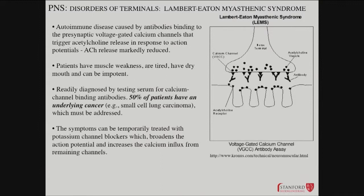The flip side of myasthenia gravis is Lambert-Eaton myasthenic syndrome. This is when antibodies to the presynaptic terminal are generated, often for mysterious reasons. The voltage-gated calcium channels that live in the presynaptic terminal and open to allow calcium in and allow vesicle fusion — they fall under attack by antibodies. So the postsynaptic membrane is fine, but it's the presynaptic membrane that's impaired, resulting in reduced acetylcholine release.